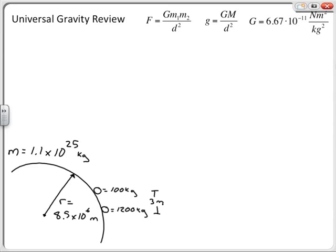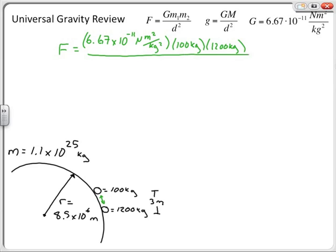Let's first take a look at what the gravitational attraction is between the two small objects — the person and the vehicle. I'm going to plug in the information I know and say that the force felt between these two objects is equal to the universal gravitational constant 6.67 times 10 to the minus 11 newton meters squared per kilogram squared, multiplied by the masses: 100 kilograms and 1200 kilograms. It doesn't matter which one goes where, because mathematically it comes out the same.